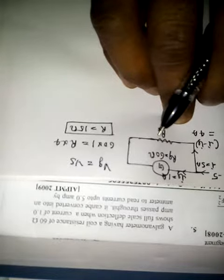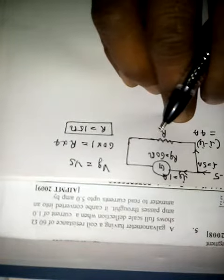Actually, in a galvanometer, if you connect a very low resistance parallel with the galvanometer, then it will act as an ammeter.